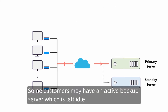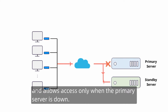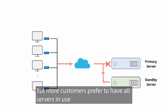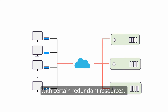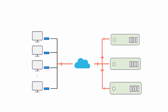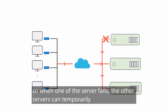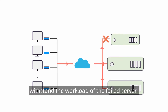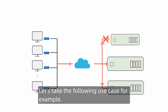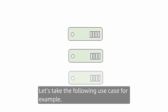Some customers may have an active backup server which is left idle and allows access only when the primary server is down. But more customers prefer to have all servers in use with certain redundant resources, so when one of the servers fails, the other servers can temporarily withstand the workload of the failed server. Let's take the following use case for example.